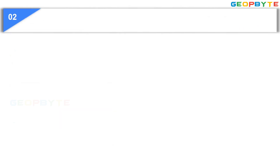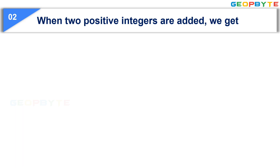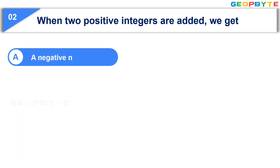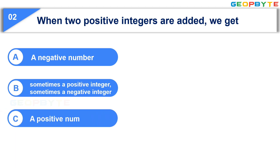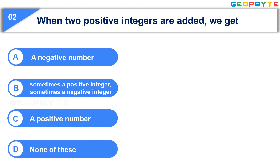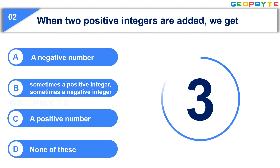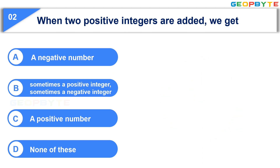The second question: When two positive integers are added, we get — Option A: a negative number. Option B: sometimes a positive integer, sometimes a negative integer. Option C: a positive number. Option D: none of these. Your time starts now. Your time is up. And the correct answer is Option C: a positive number.